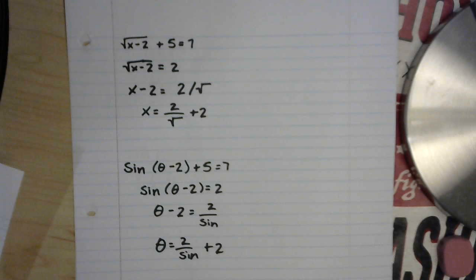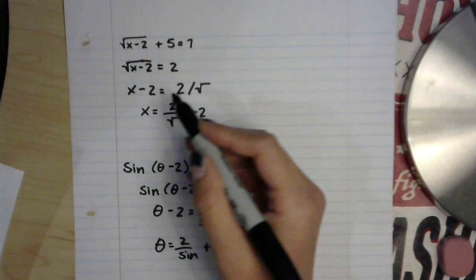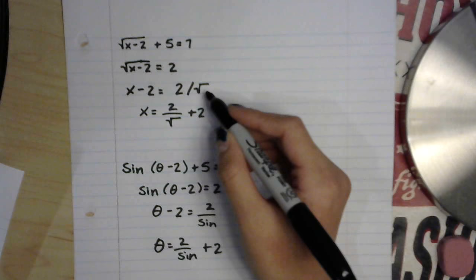This person decided to use inverse operations to solve for this equation for x and they used division here to try to cancel the square root out on this side, and the inverse operation for the square root is not division.